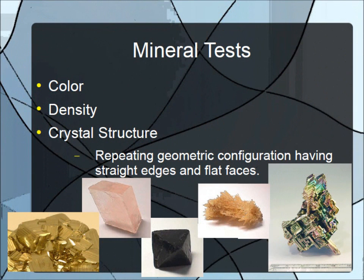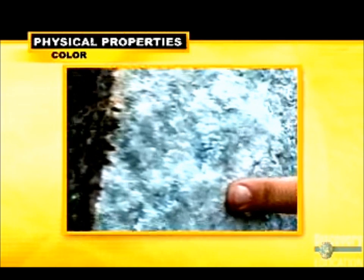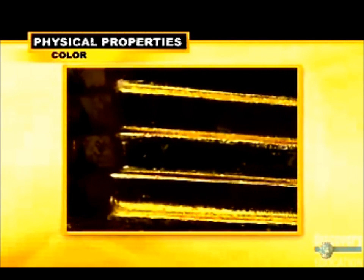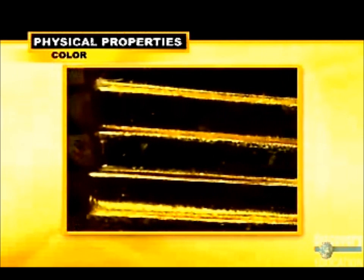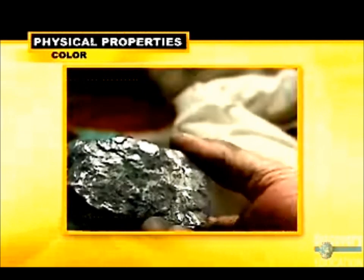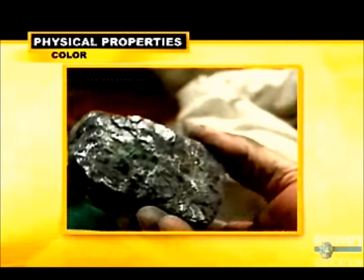Due to the huge number of minerals in the world, geologists use several different tests to determine the identity of a mineral. The first and most basic is color. The problem with color is that small impurities within the crystal structure can dramatically change a mineral's appearance, and several minerals may share the same color.